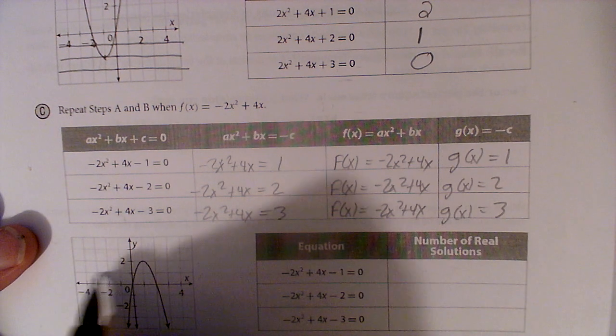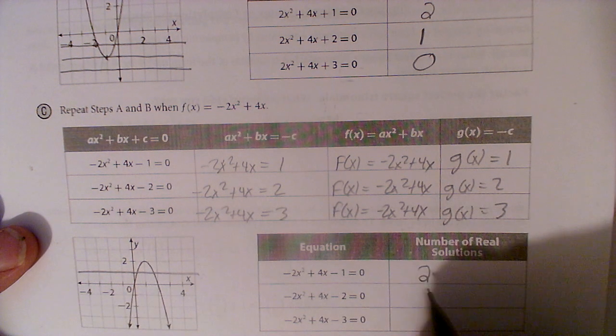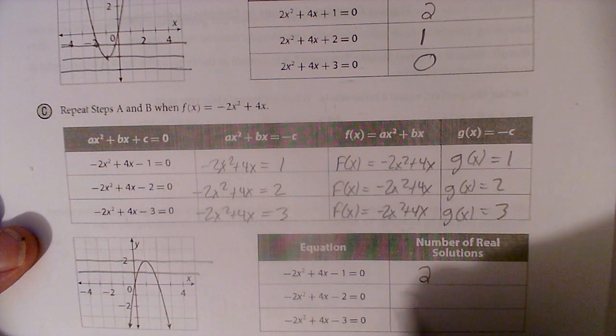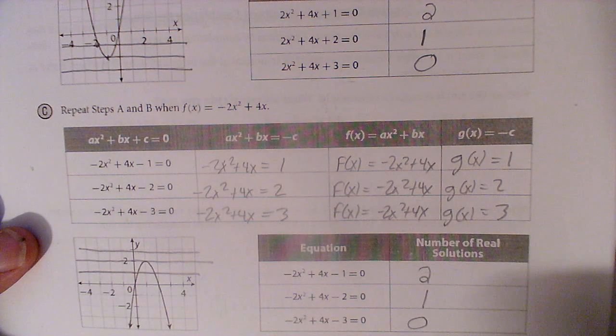So let's put 1 there. There's our 1. Still has two solutions. Here's our 2. This one also has one solution. And the one up here has zero solutions.